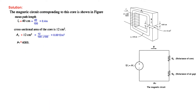Now the parameters. Most importantly, you have to convert all given values into meters. The mean path was given as 40 cm, so that becomes 0.4 meters. The cross-sectional area given is 12 cm², so dividing by 100×100 gives 0.012 m². Remember: this is wrongly written as 0.02 in the book. The relative permeability mu_R is 4000.